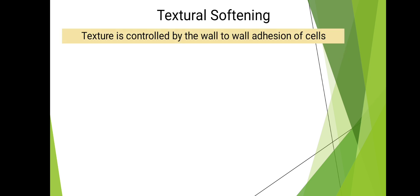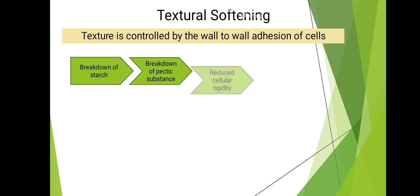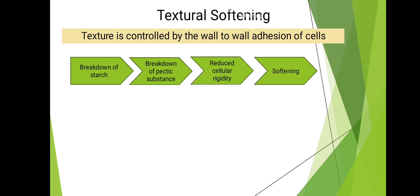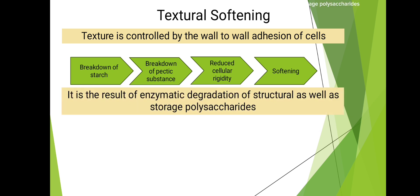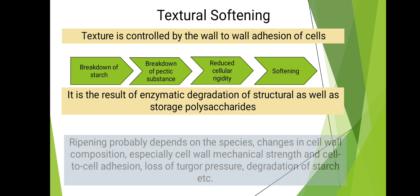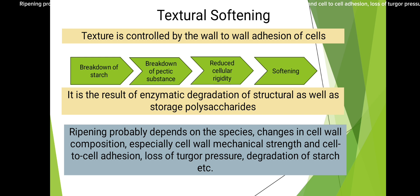Textural softening: texture is controlled by wall-to-wall adhesion of cells. It involves breakdown of starch, breakdown of pectic substances, and reduced cellular rigidity. Softening is the result of enzymatic degradation of structural as well as storage polysaccharides. It depends on changes in cell wall composition, especially cell wall mechanical strength and cell-to-cell adhesion, as well as loss of turgor pressure.